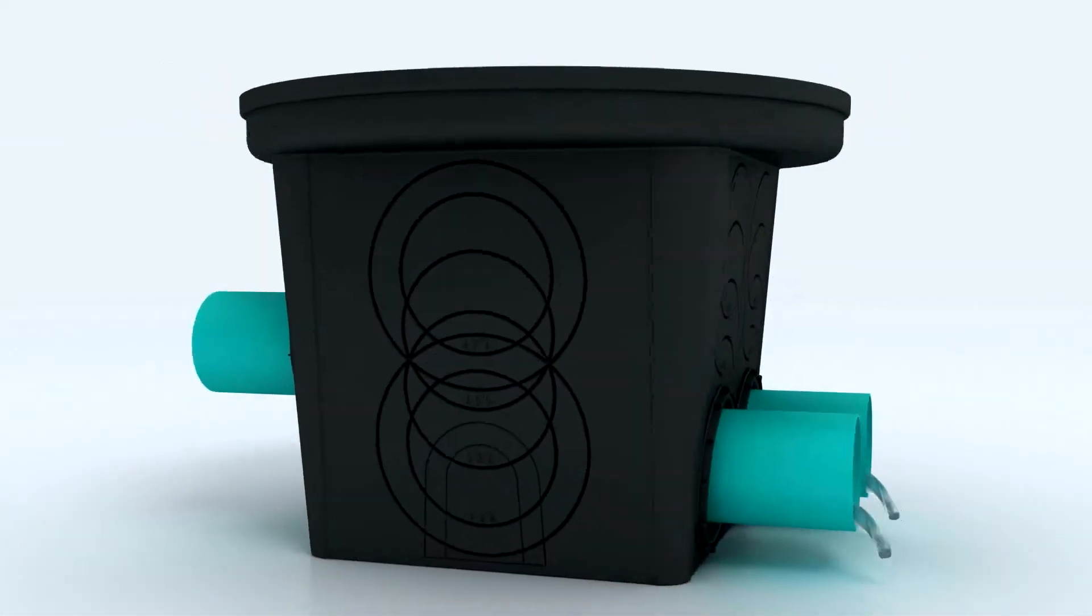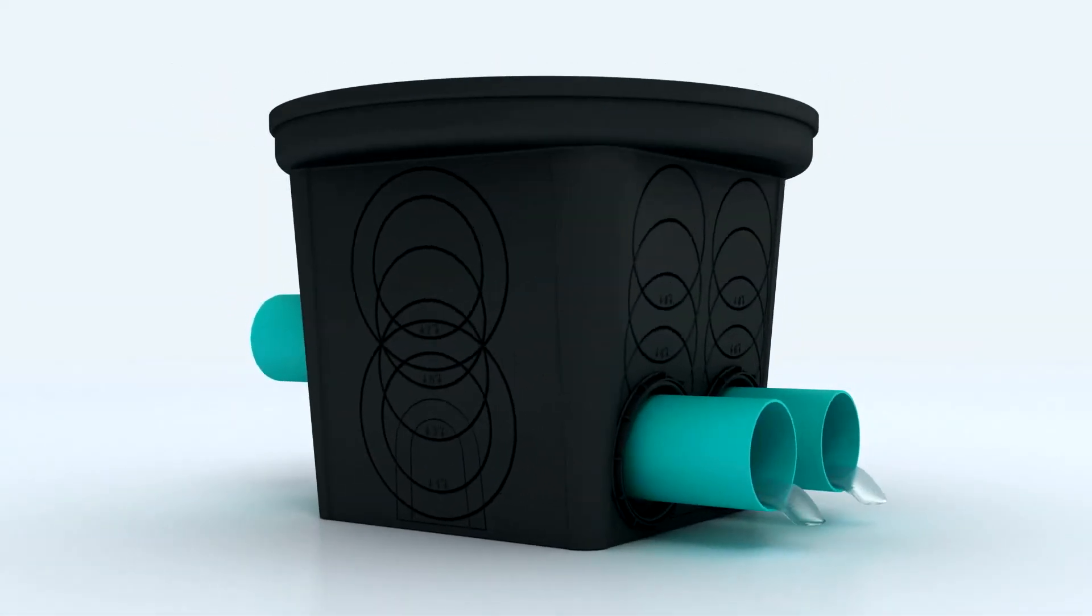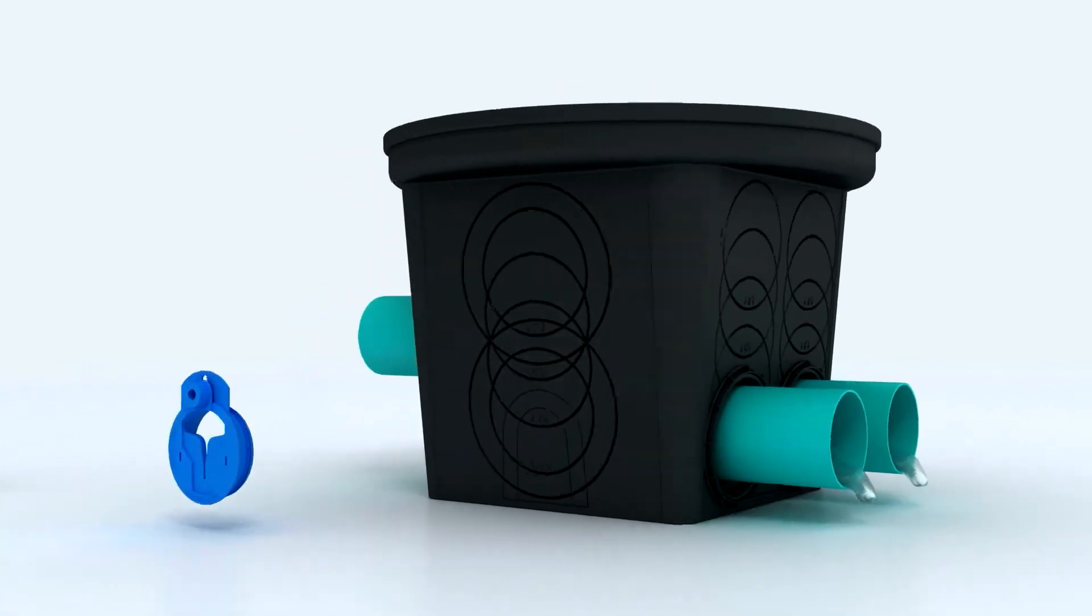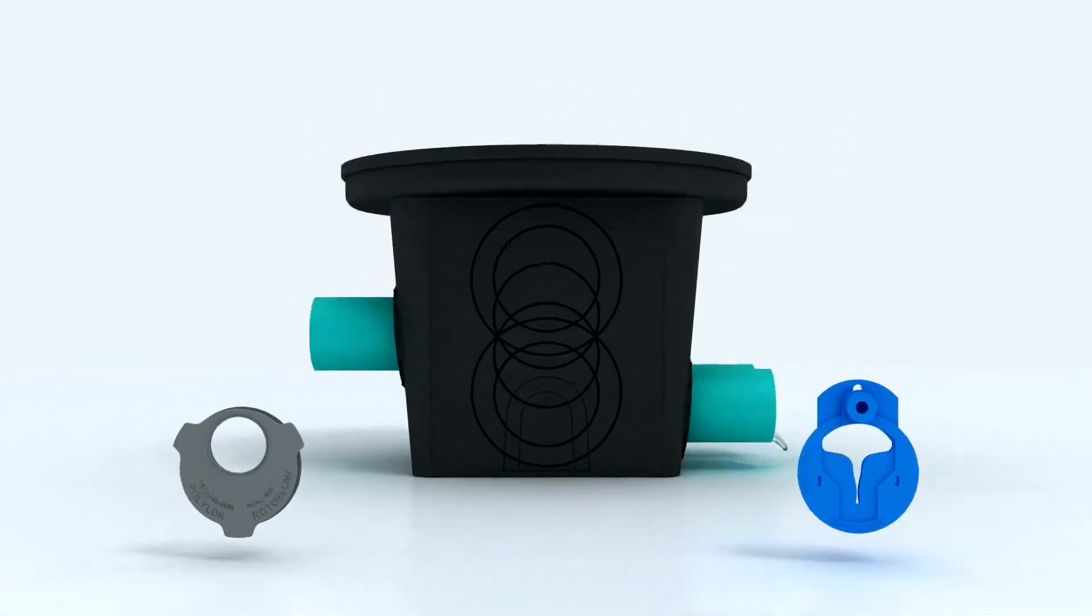To set the level on both the Equalizer and Rotoflow for even distribution, fill the bottom of the distribution box with water, then adjust all outlets to the same water level.